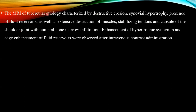MRI findings of tubercular etiology are characterized by destructive erosion, synovial hypertrophy, presence of large fluid reservoirs, and extensive destruction of the muscles, stabilizing tendons, and capsule of the shoulder joint, with humeral bone marrow infiltration. Enhancement of hypertrophic synovium and rim enhancement of fluid reservoirs were observed after intravenous contrast administration.